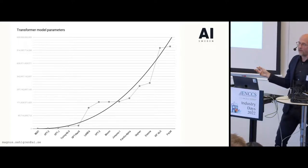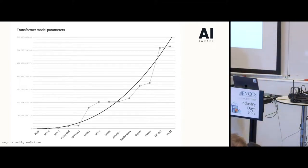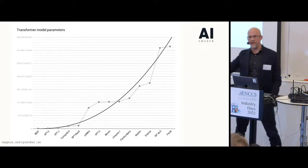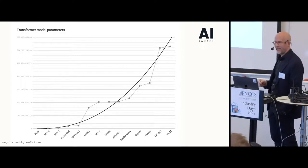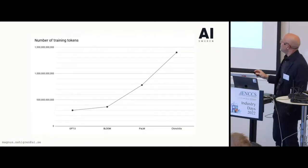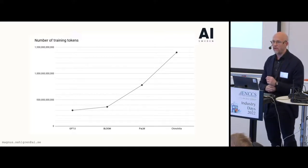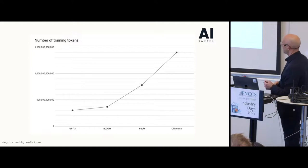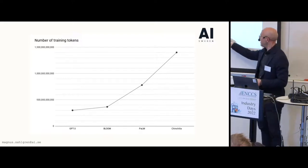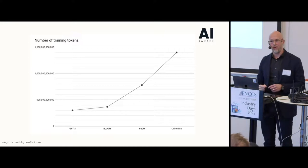These are dense Transformer models. There are sparse models with more parameters, but they are sparse. Bloom is an open source model built specifically for African and Indian languages — a really interesting mix — with 176 billion parameters. We've also seen an increase in the size of training data. GPT-3 was trained on 300 billion tokens, which is a lot of text. Then DeepMind released a model trained on 1.4 trillion tokens — enormous amounts of data.